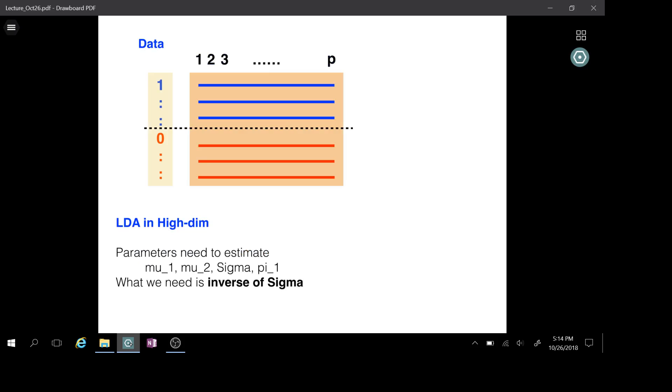Let's consider a binary classification problem and our data will look like this. The data are from two groups, Y equals 1 or 0, blue or red. And for every observation, we have a p-dimensional feature vector X. If you are from class 1, I color those features in blue.